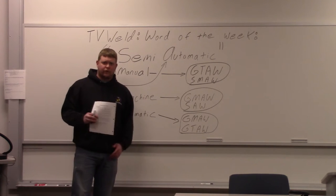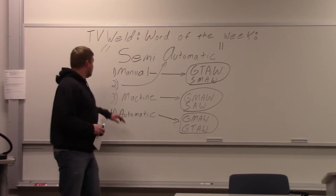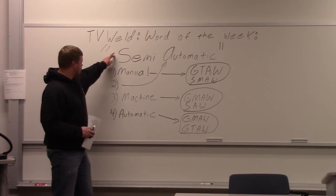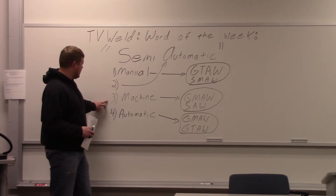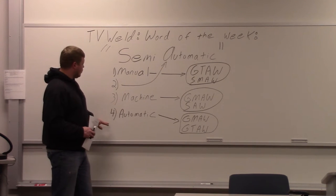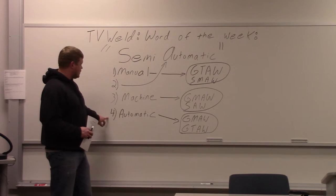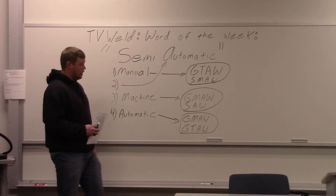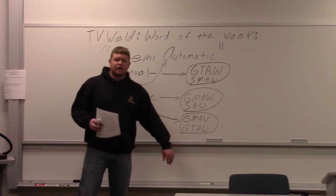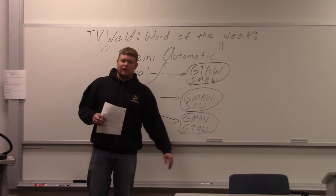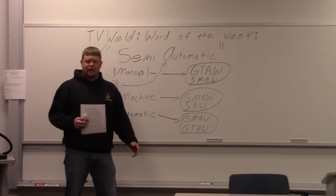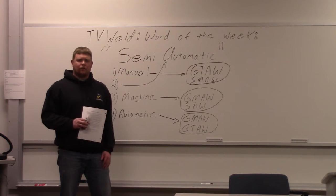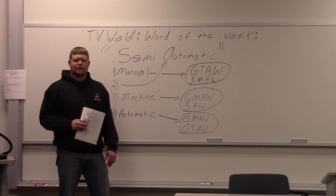Welding processes are one of four things: manual process, semi-automatic process, machine process, or automatic process. And I got to these when I was checking a box and I said, is MIG welding a manual, semi-automatic, machine, or an automatic process?